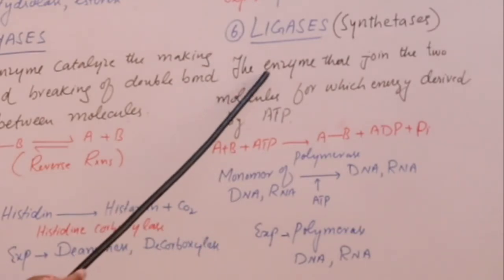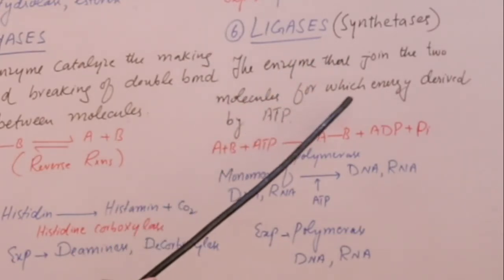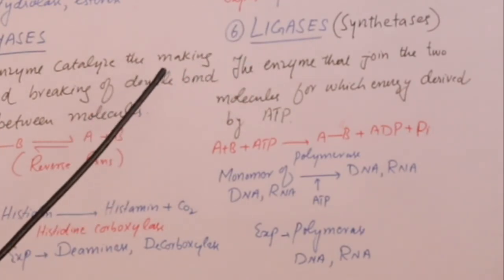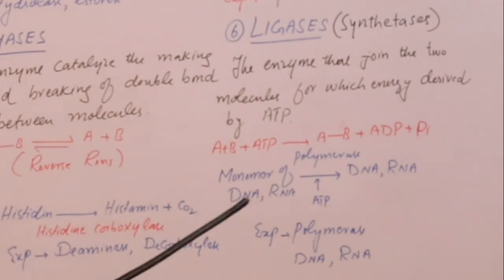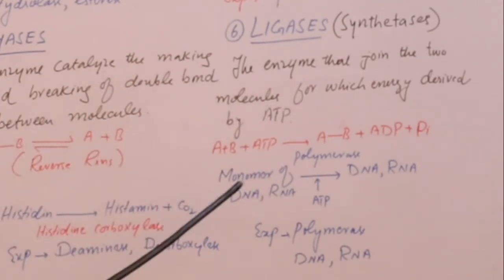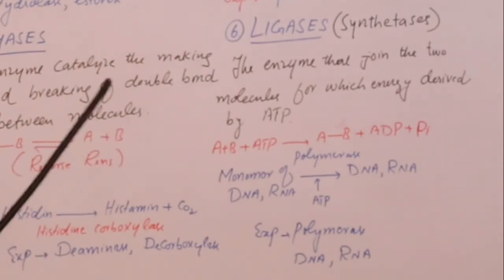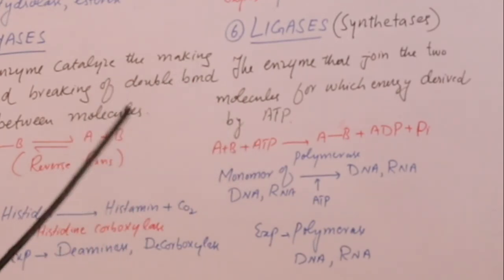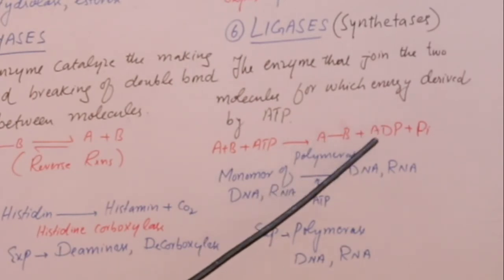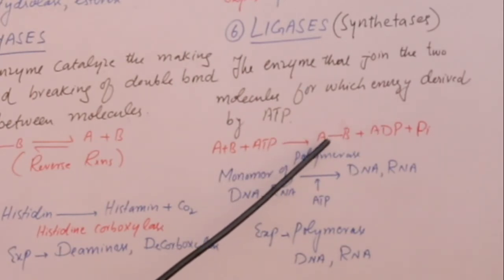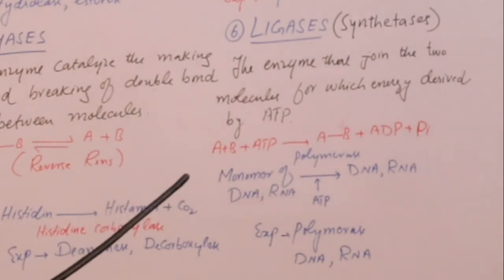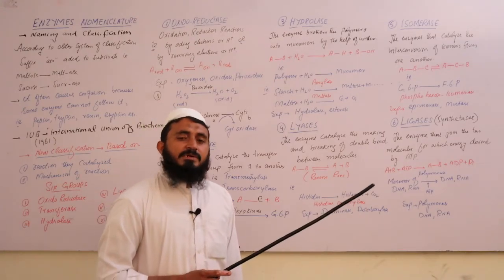The sixth and last group is ligases, also called synthetases. These enzymes join two molecules together using energy derived from ATP. For example, molecules A and B, when ATP is added, are joined together; the phosphate bond energy enables their joining and ATP is converted to ADP.